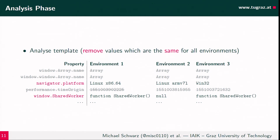Some results are obvious — navigator.platform is designed to indicate the platform the code is running on, and we see it reports Linux, Android, or Windows. This can be anonymized, as in the Tor browser. The interesting ones are properties that leak environmental information but are not defined to do so. For example, window.SharedWorker implements multi-threading functionality not available on Android, so if it's null or undefined, we know we're on a mobile browser.